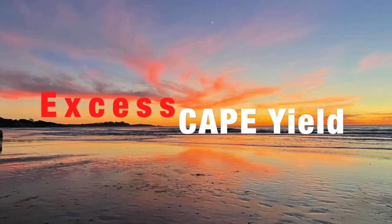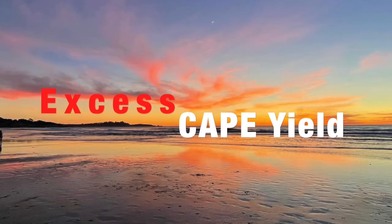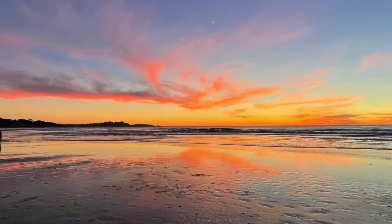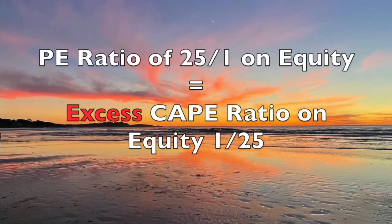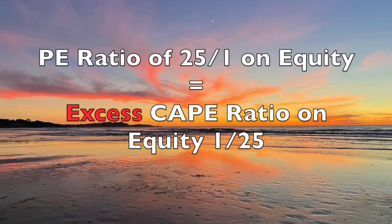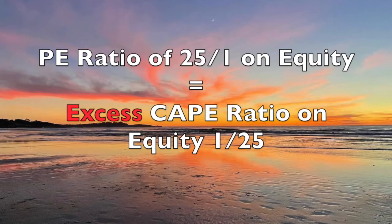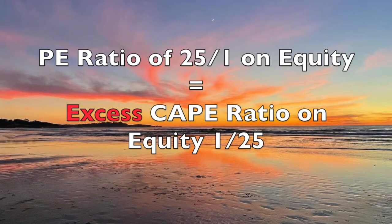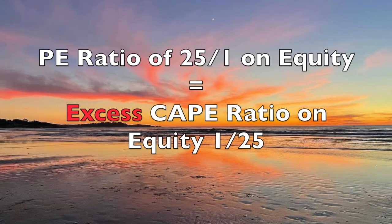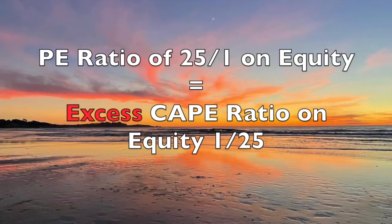Let's do a quick example. Let's say the PE of the S&P 500 is 25. If it was 25, that's 25 over 1. If we invert that, 1 over 25 would be 0.04 — which would mean I would get 4 cents of earnings exposure for every dollar that I'm forced to pay in order to buy my stock. Are you with me so far?